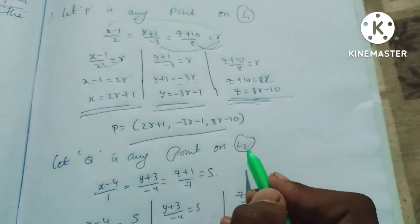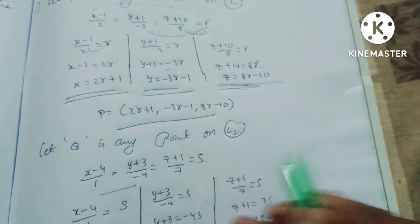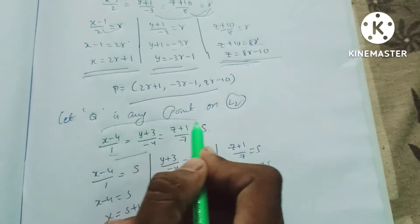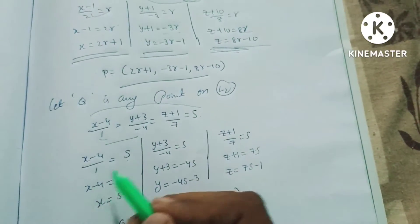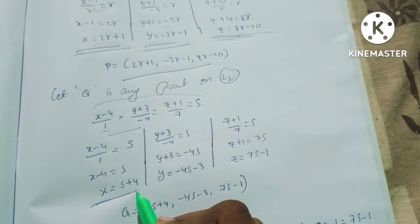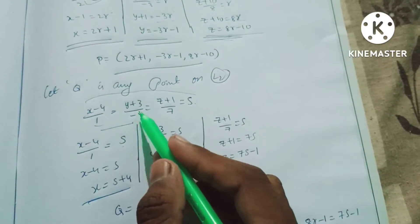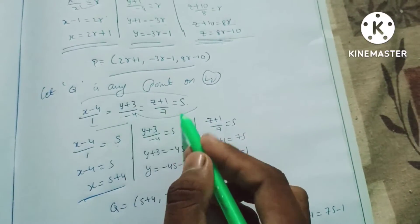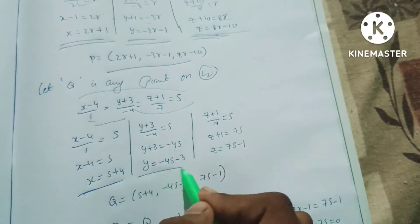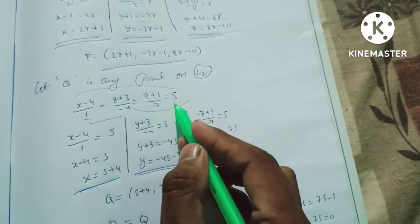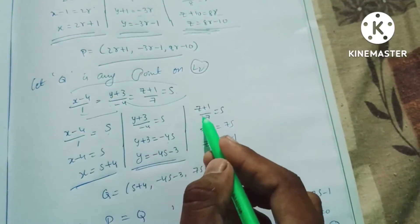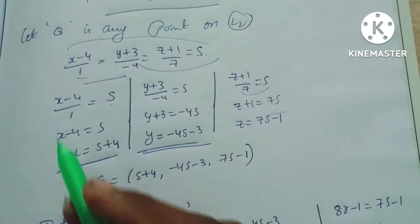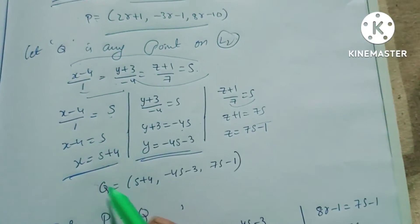Let Q be any point on line 2 with parameter S. Then x = S+4, y = −4S−3, z = 7S−1.